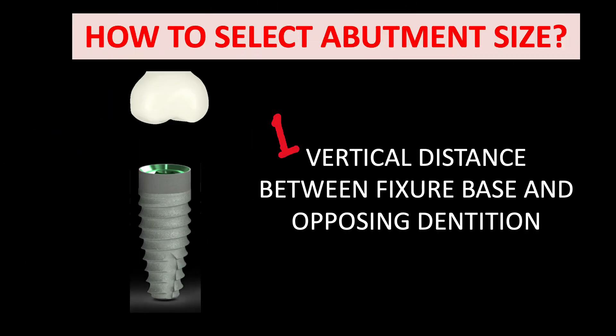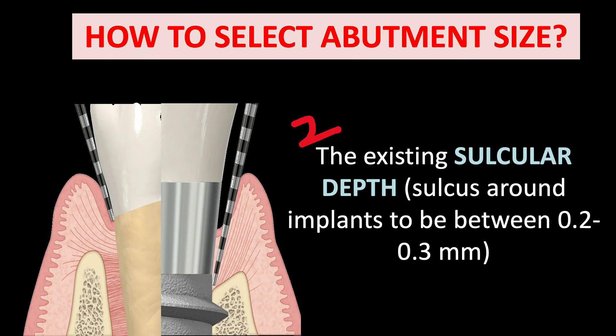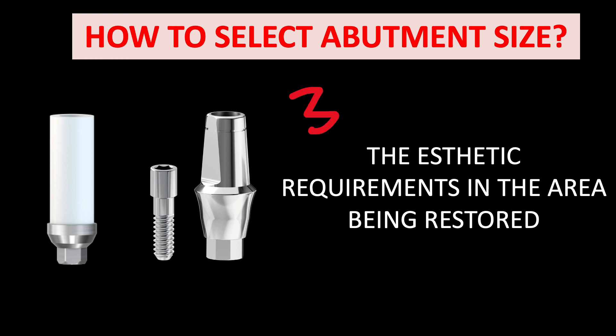How to select abutment size: first, it should depend upon the vertical distance between the fixture base and the opposing occlusal indentation, as you can see in the figure. Second, the existing sulcular depth around the implant should be between 0.2 to 0.3 mm, as shown in the figure. Third and last, the aesthetic requirement in the area being restored.